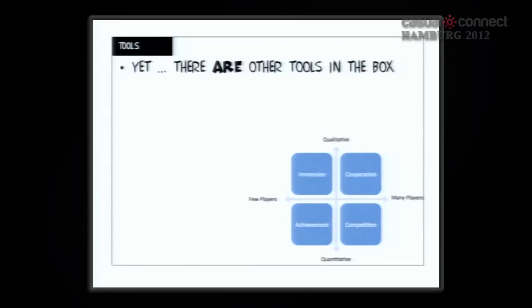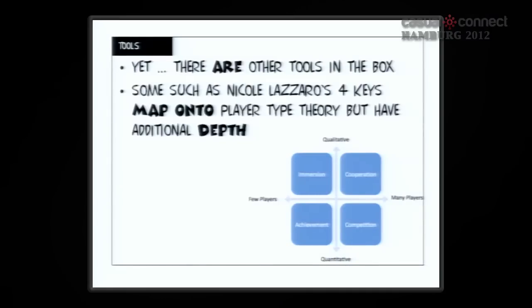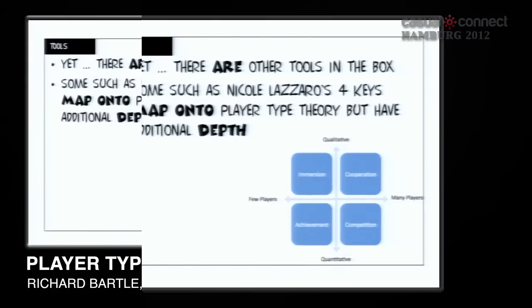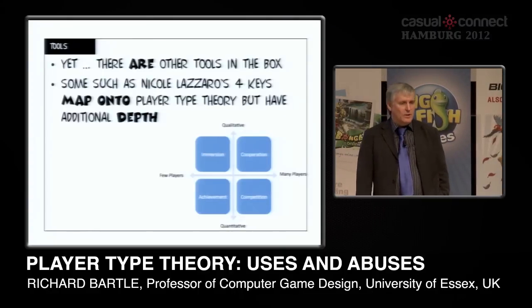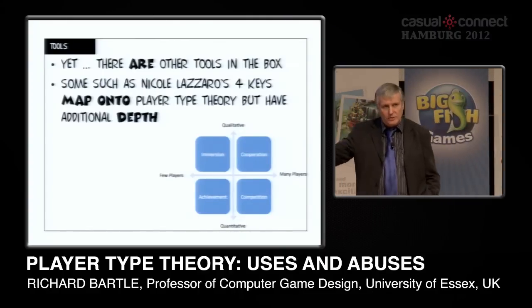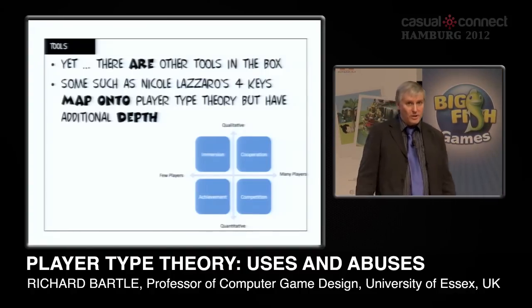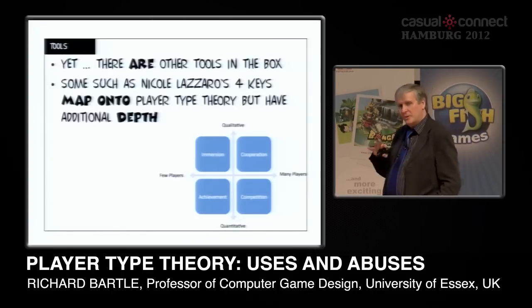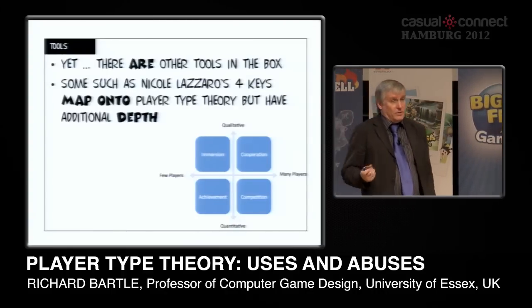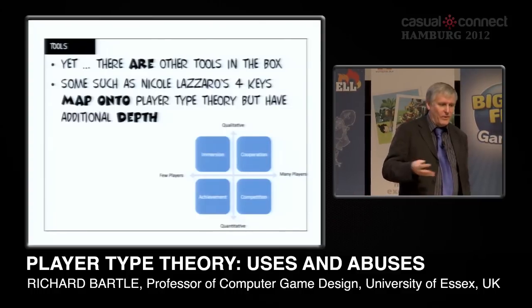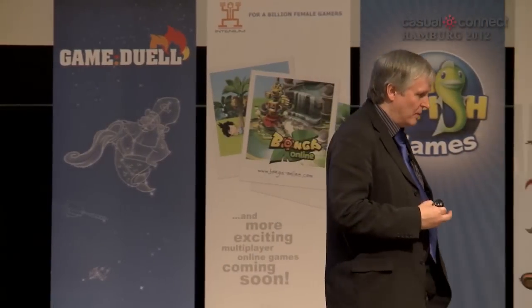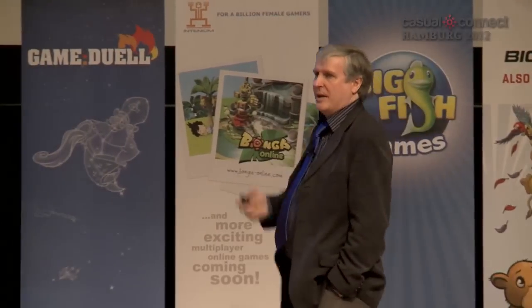But there are other tools in the box — it's not the only one. Nicole Lazzaro has a pretty good tool that she's tested many times, with psychological testing, wired people up, tracked their eyes — and it works pretty well. It maps onto the player types but gives you additional depth. It doesn't have a theory behind it, though it does link back to Kalwa for those with an academic background. It's a more specialised version of the player types tool.